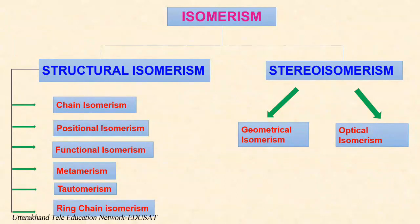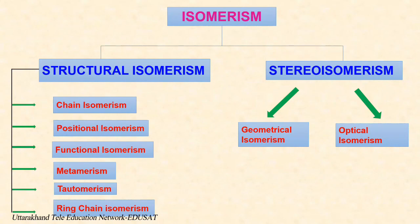Isomerism in organic compounds can be classified broadly into structural isomerism and stereoisomerism, which can be further categorized into different subtypes. This flowchart shows the different isomer categories. Structural isomerism, also called constitutional isomerism, involves two or more organic compounds having the same molecular formula but different structures. The functional groups and atoms in these isomers are linked in different ways and sequences, and they usually show different physical and chemical properties.